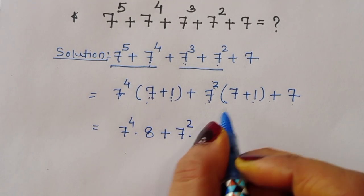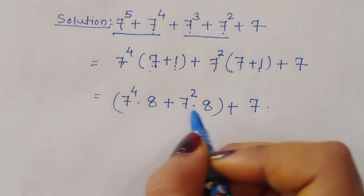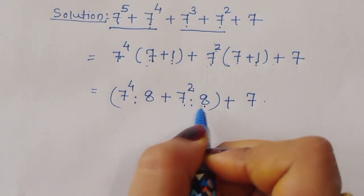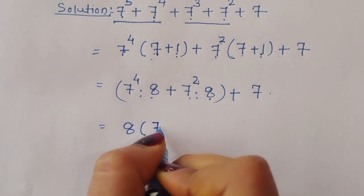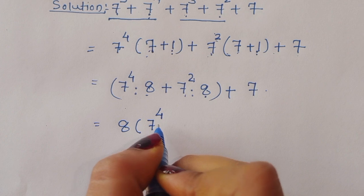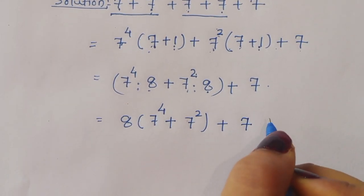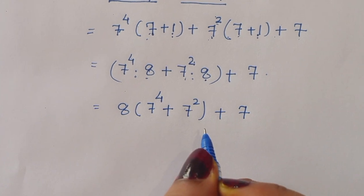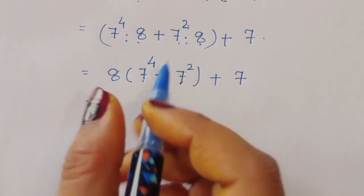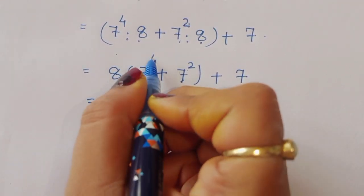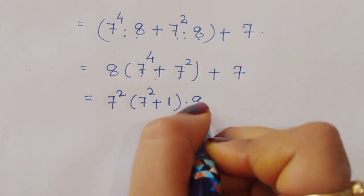Since 7 times (7 plus 1) is common in both terms, we can take it outside. This gives us 7 power 4 plus 7 power 2, and plus 7. Now for 7 power 4 plus 7 power 2, we take 7 power 2 common, leaving 7 power 2 plus 1, which is times 8, plus 7.